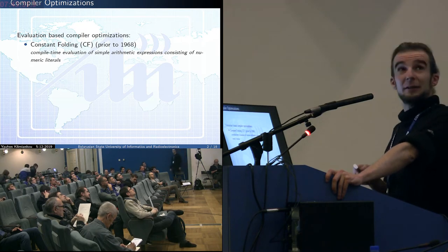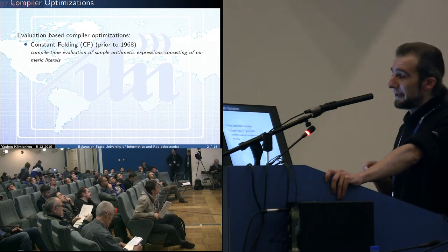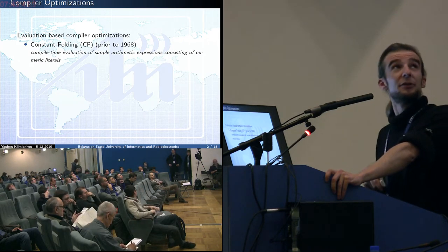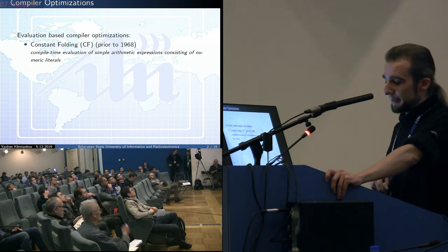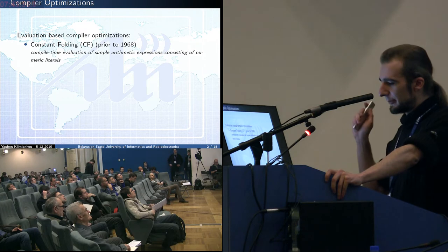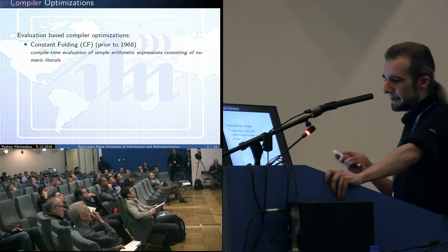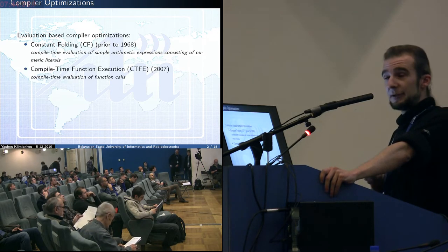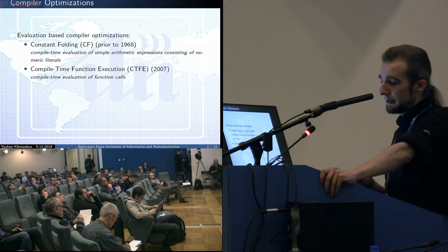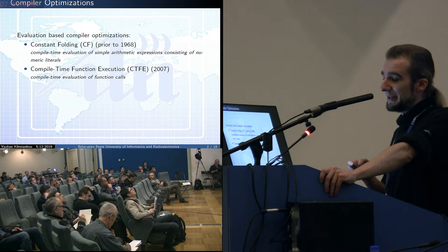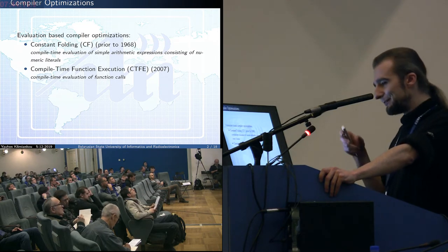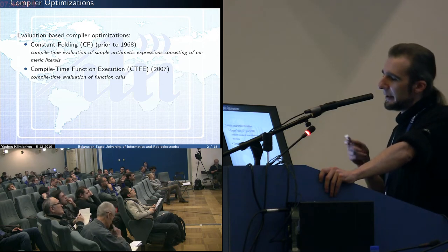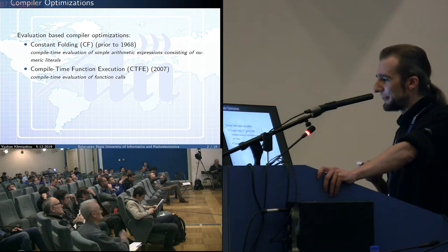Specifically, constexpr in C++. There are several types of optimization based on calculations made by the compiler at the compilation stage. Historically, one of them — constant folding — appeared back in the 1970s. The very first Fortran compilers used it. But in the mid-2000s, a new approach appeared, first for the D language. The C++ development community started talking about this optimizer even earlier.